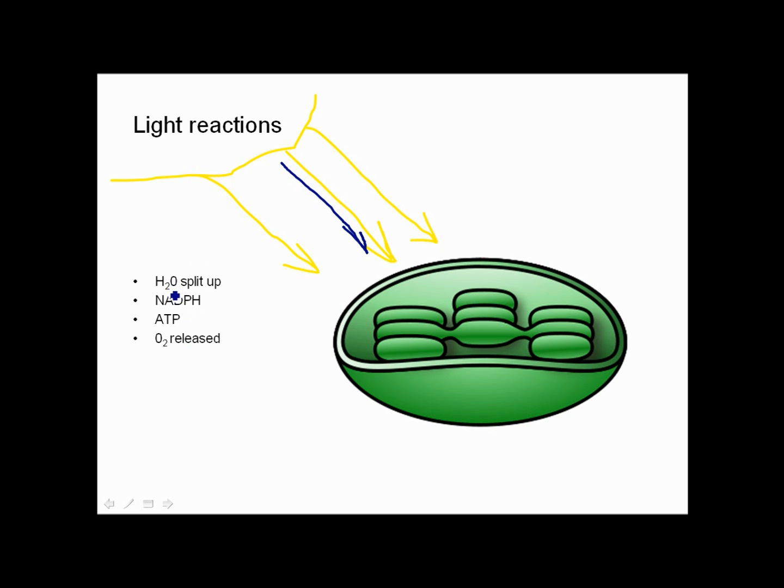And then of course since the H2O, the water has been split up, the O, the oxygen is released back into the atmosphere. And this is how, as you've heard, plants produce oxygen or release free oxygen so that it can be used by other living things.